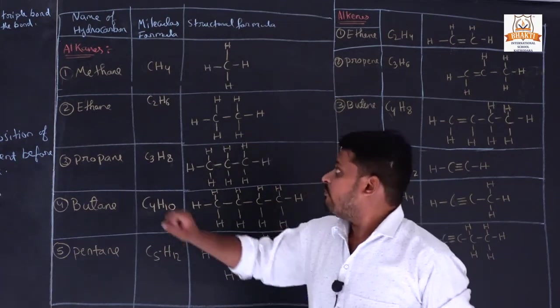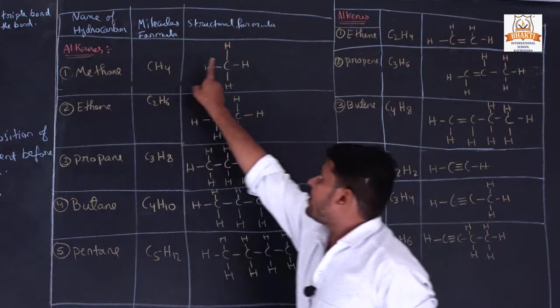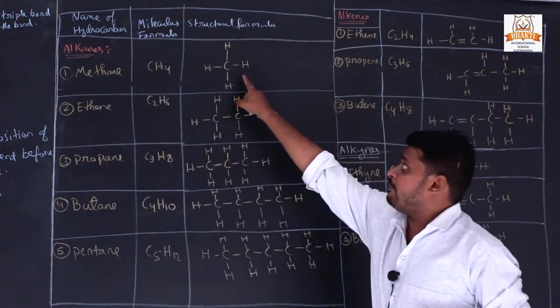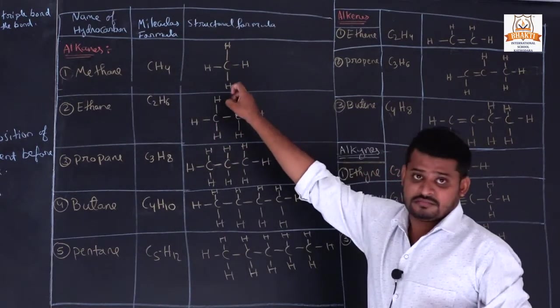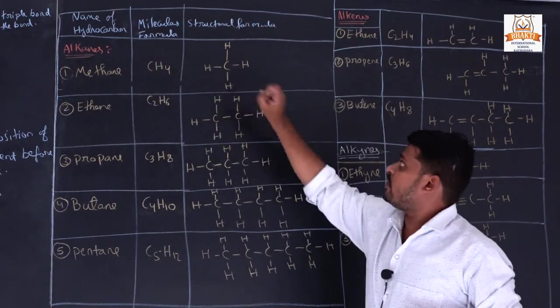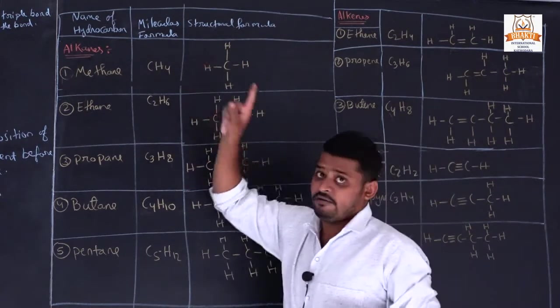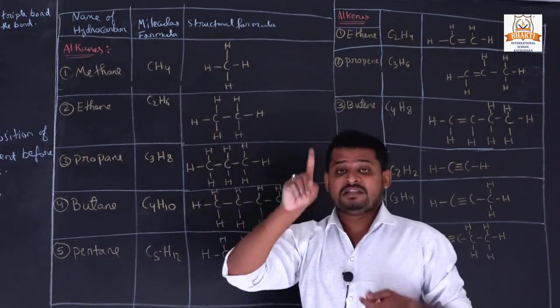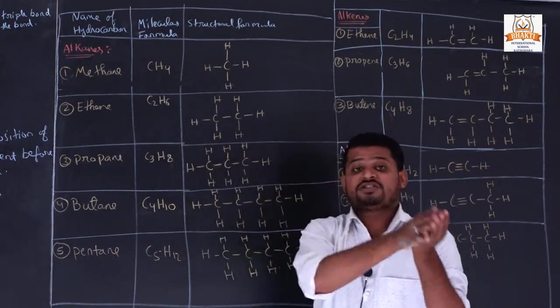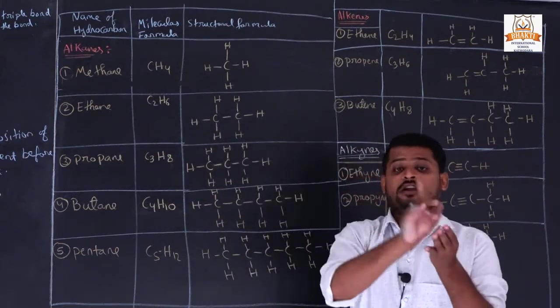If the number of carbon atoms present in the structural formula is one, then it is called 'meth-'.